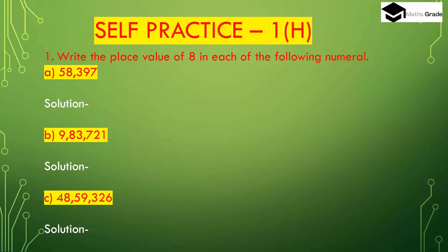Now we will solve question number 1: Write the place value of 8 in each of the following numerals. First, part (a): 58,397. Here the digit 8 is in the thousands place — units, tens, hundreds, and this is thousands. So the place value of 8 is 8,000.